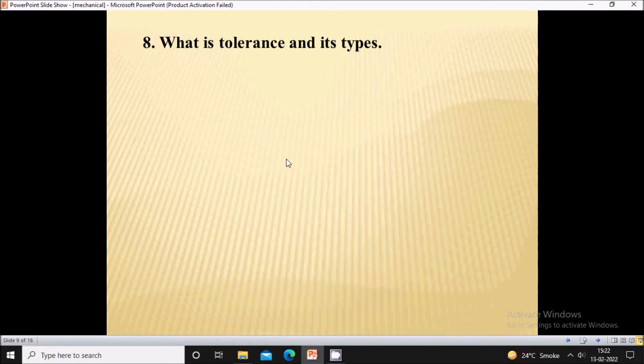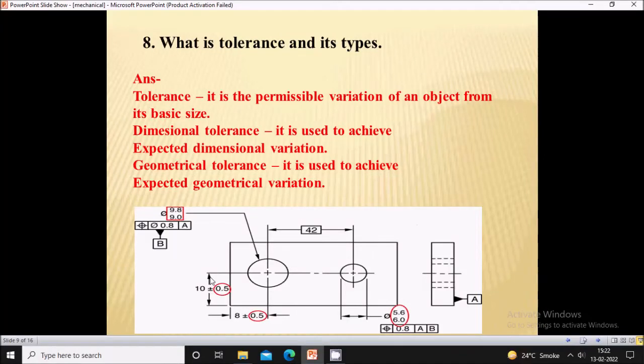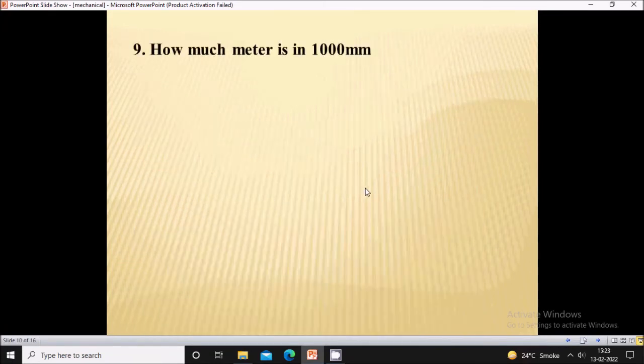Next question: what is tolerance and its types? Tolerance is defined as the permissible variation of an object from its basic size or actual size. Tolerances are of two types: first is dimensional tolerance, used to achieve expected dimensional variation. Second is geometrical tolerance, used to achieve expected geometrical variation, such as variation in position.